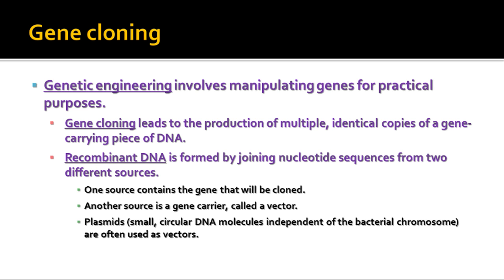What we do in genetic engineering is manipulate genes for some kind of purpose. Gene cloning allows us to make multiple copies of a gene — the pieces of DNA that carry the genes — and that's oftentimes done by a process called recombinant DNA. This is formed by joining nucleotide sequences or DNA sequences from two different sources. One source contains the gene we're going to clone, and the other is the gene carrier called a vector. The one most commonly used in biomanufacturing is something called a plasmid, which is the small extra piece of DNA found in prokaryotes.